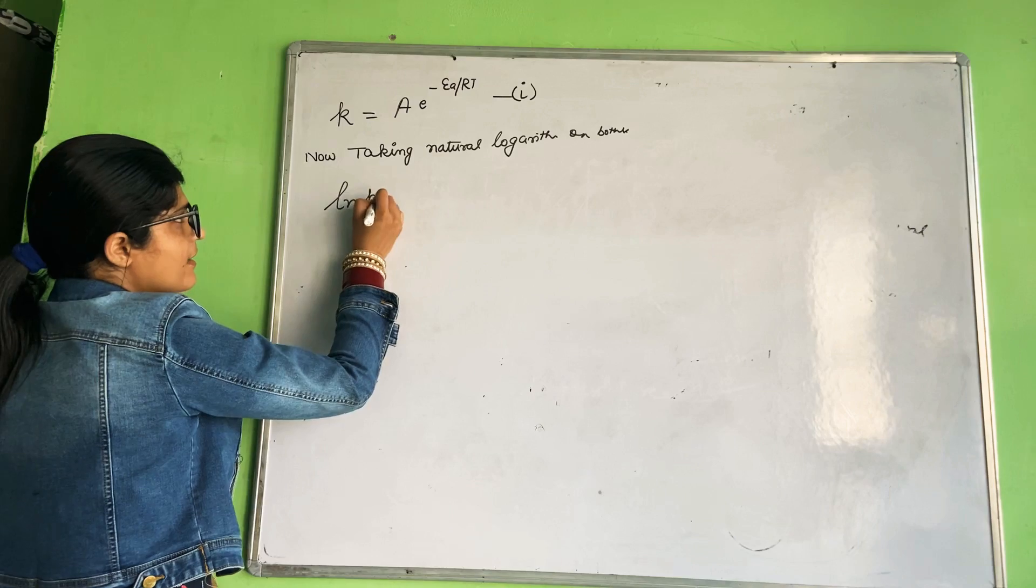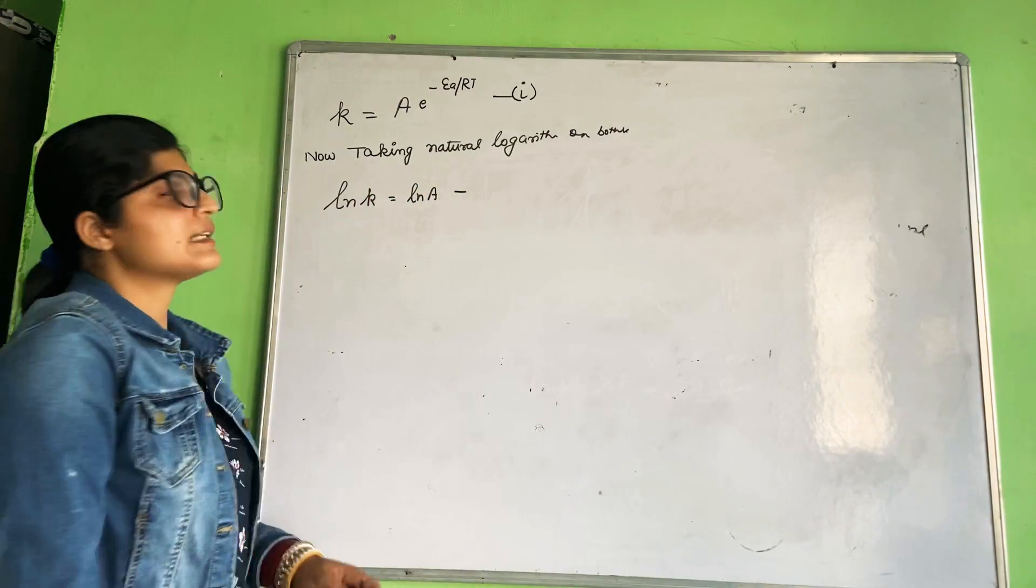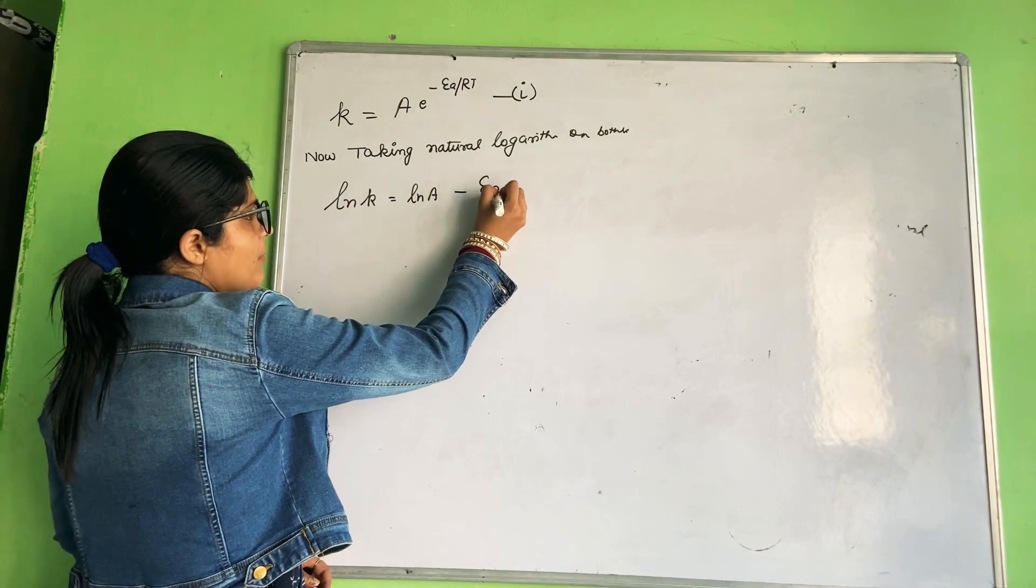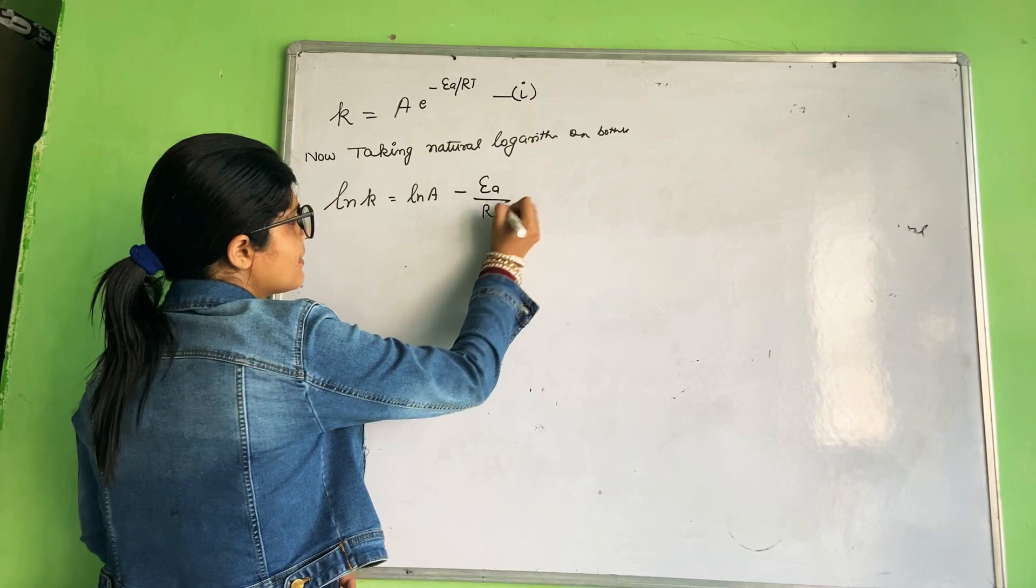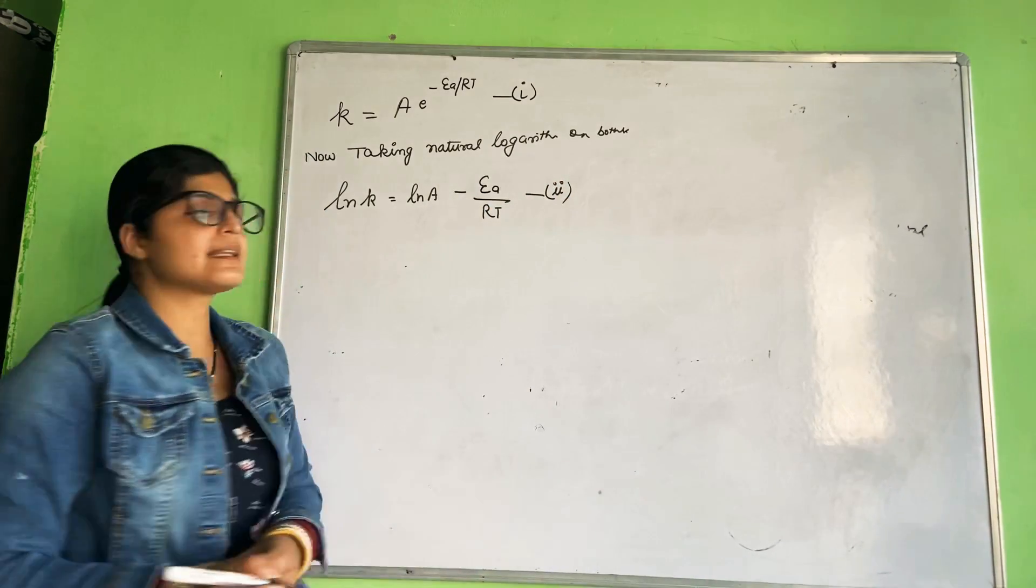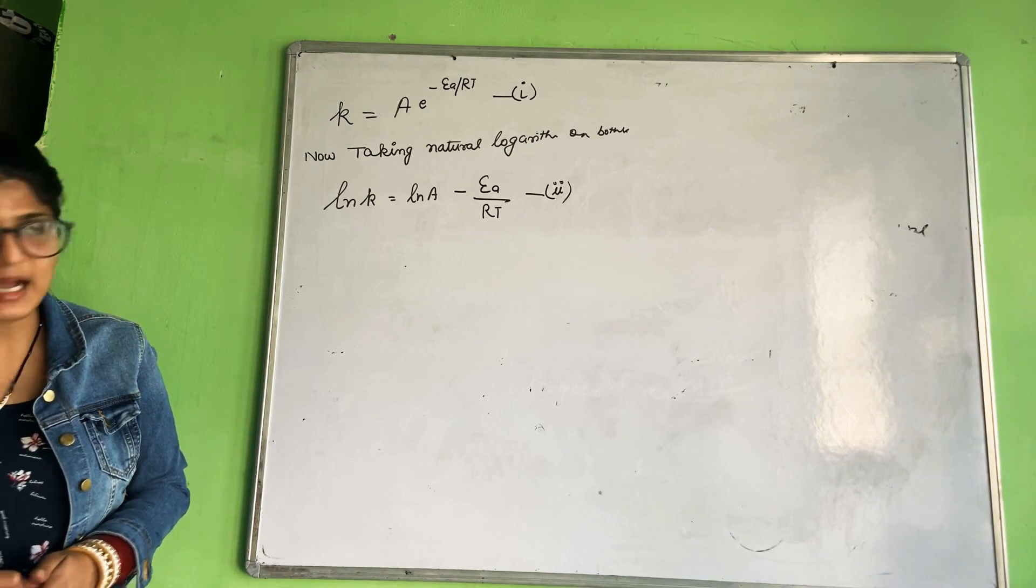ln k equals ln A minus Ea upon RT. This becomes equation number 2: ln k equals ln A minus Ea upon RT.